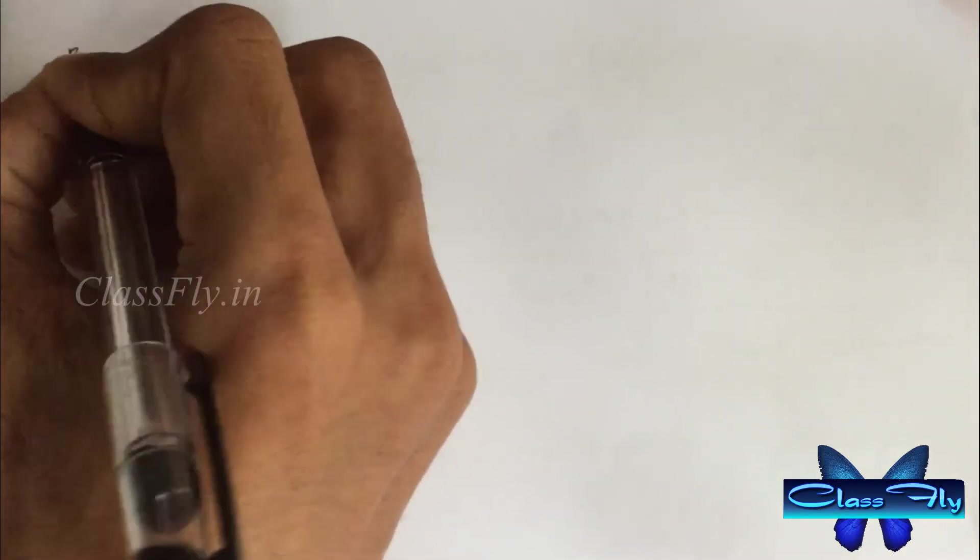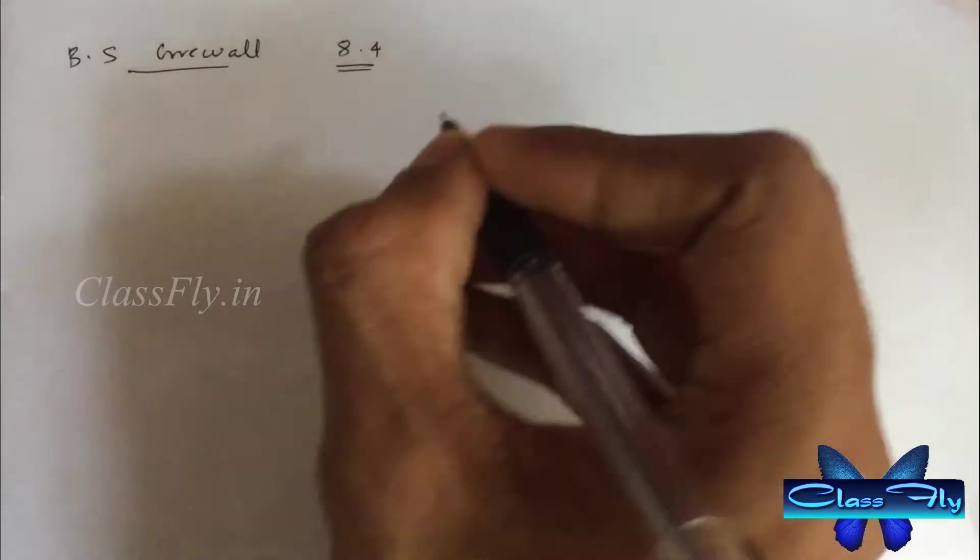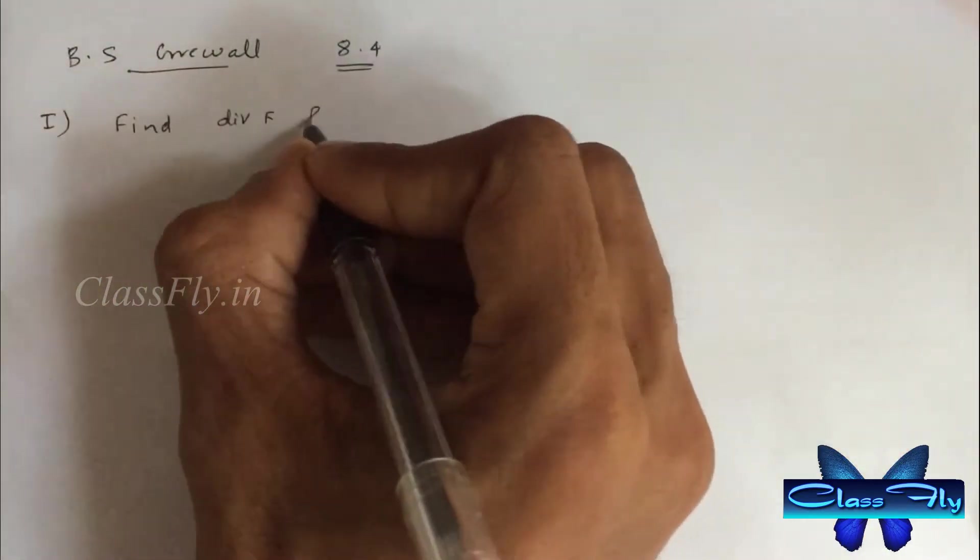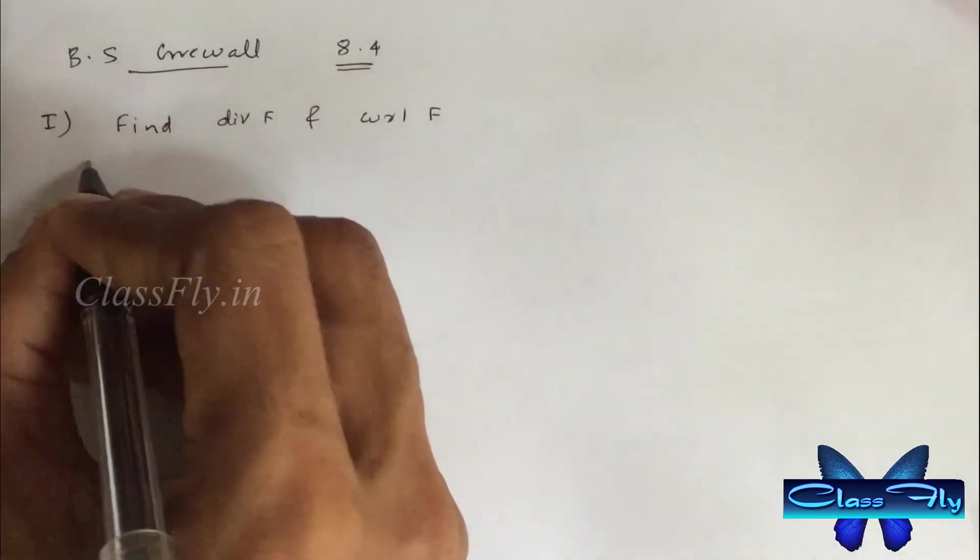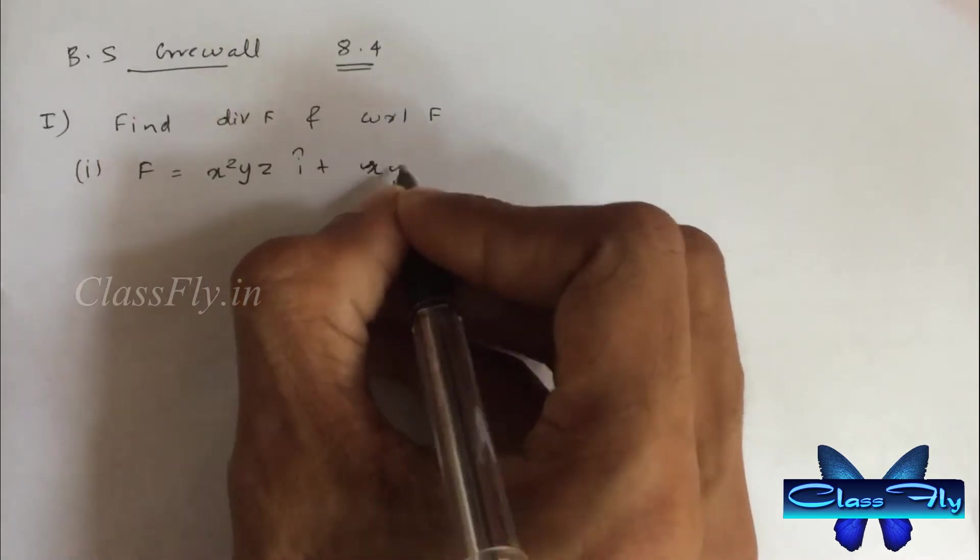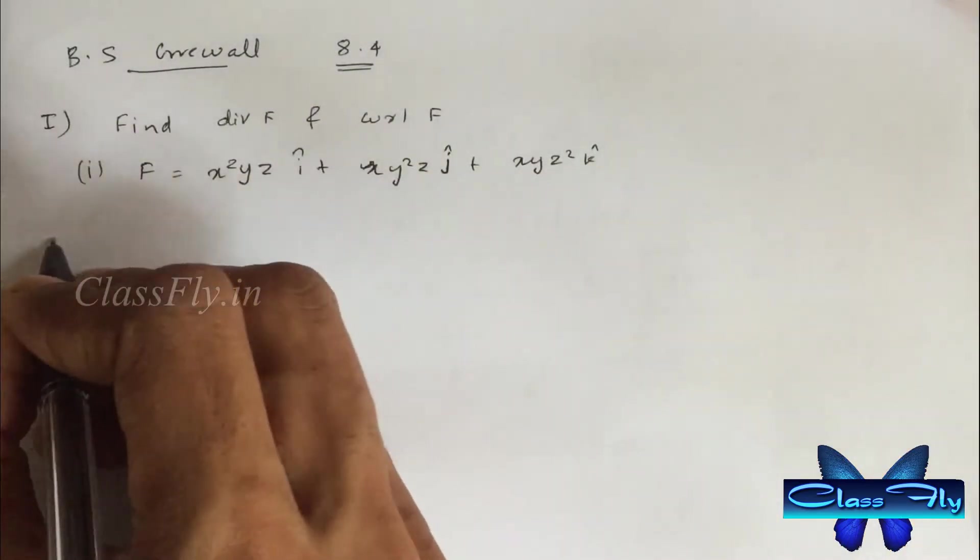In this video we will be discussing BS Grewal Chapter 8 Exercise 8.4. First question is to find the divergence and curl at the point (1, 2, 3) for the following. Problem 1: F equals x square y z i cap plus x y square z j cap plus x y z square k cap.